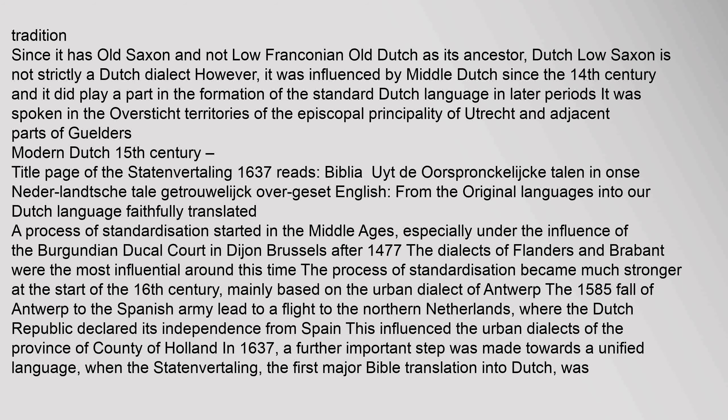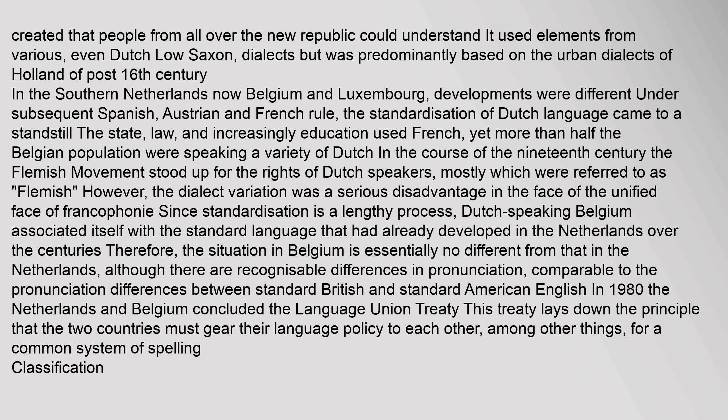A process of standardization started in the Middle Ages, especially under the influence of the Burgundian ducal court in Dijon and Brussels. After 1477, the dialects of Flanders and Brabant were most influential. The process became much stronger at the start of the 16th century, mainly based on the urban dialect of Antwerp. The 1585 fall of Antwerp to the Spanish army led to a flight to the Northern Netherlands, where the Dutch Republic declared its independence from Spain. In 1637, a further important step was taken when the Statenvertaling — the first major Bible translation into Dutch — was created, using elements from various dialects but predominantly based on the urban dialects of Holland.